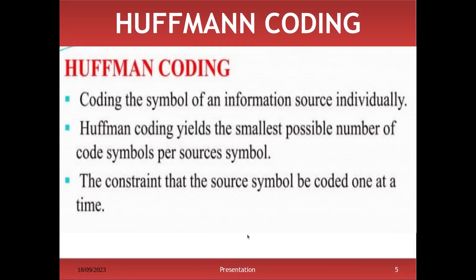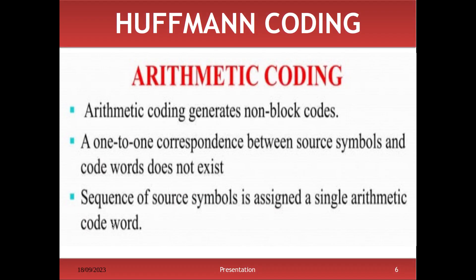Huffman coding works by replacing one symbol with one code — each symbol has an individual code. The constraint is that the source symbols be coded one at a time. Arithmetic coding, on the other hand, generates non-block coding, meaning there is no one-to-one correspondence between source symbol and code. Instead, a sequence or group of source symbols corresponds to only one code.